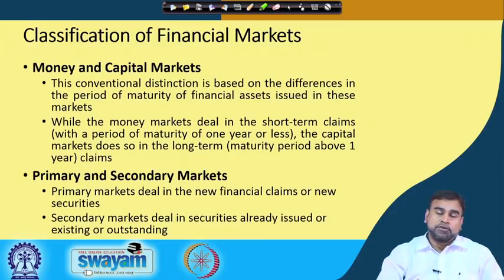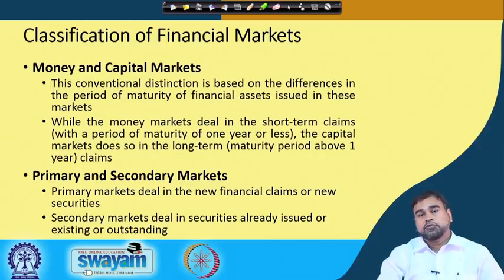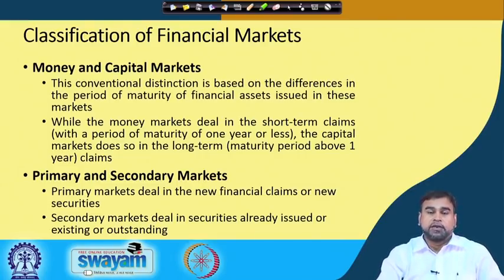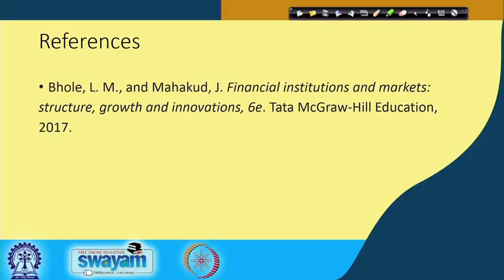Overall, I have given you the idea of what the financial system is, how the financial system is helpful for the economic growth process, which are the different major kinds of financial institutions and financial markets existing in the system, and how the structure looks. In the following session, we will be discussing how the equilibrium in the financial market is established, what equilibrium in the financial system means, and how that concept is helpful. Please go through the references for this particular session. Thank you very much.